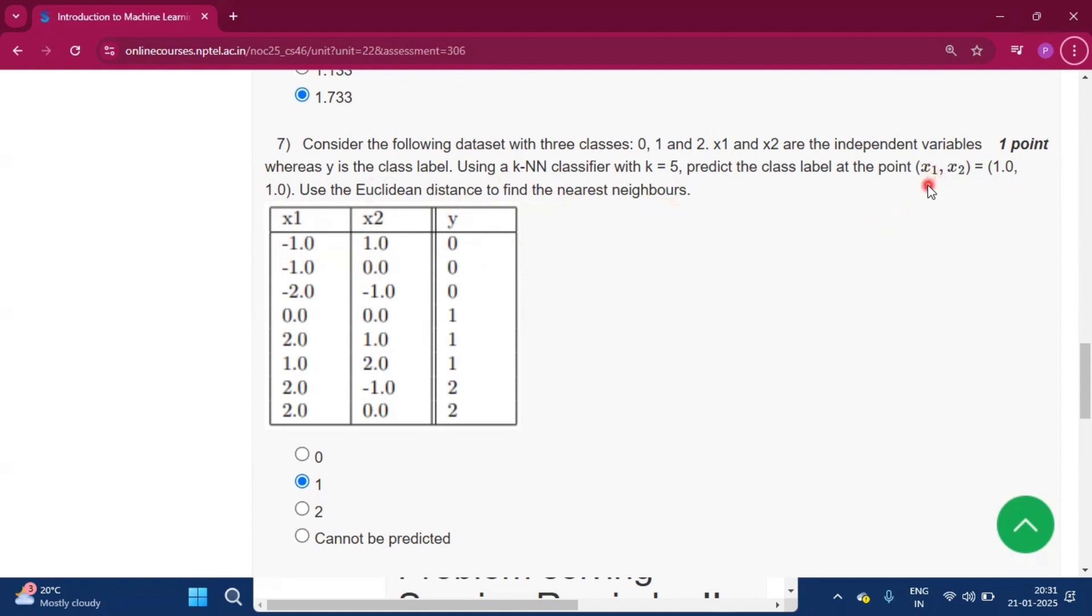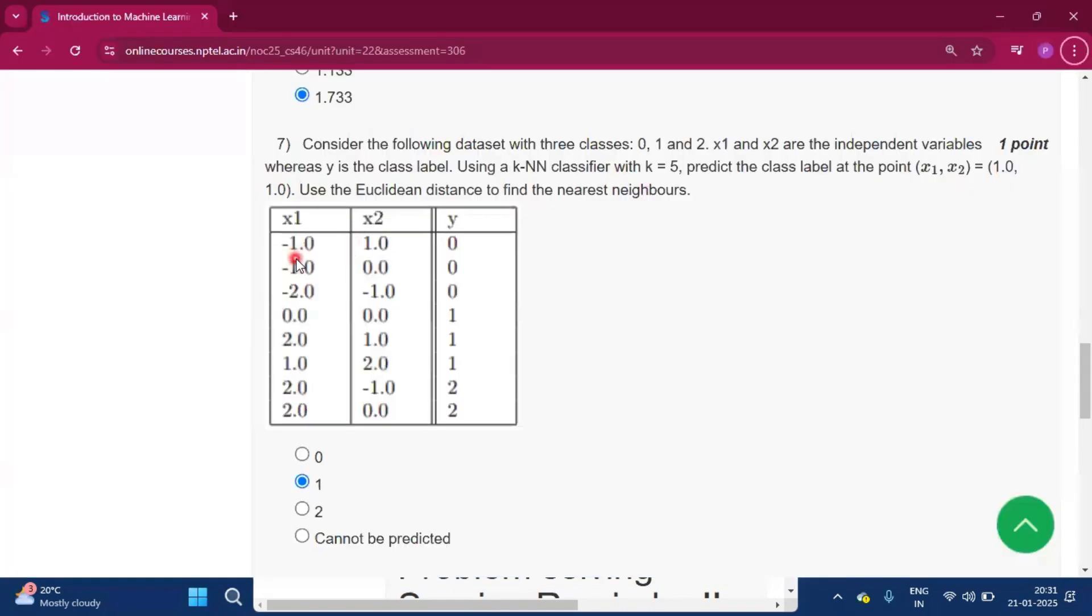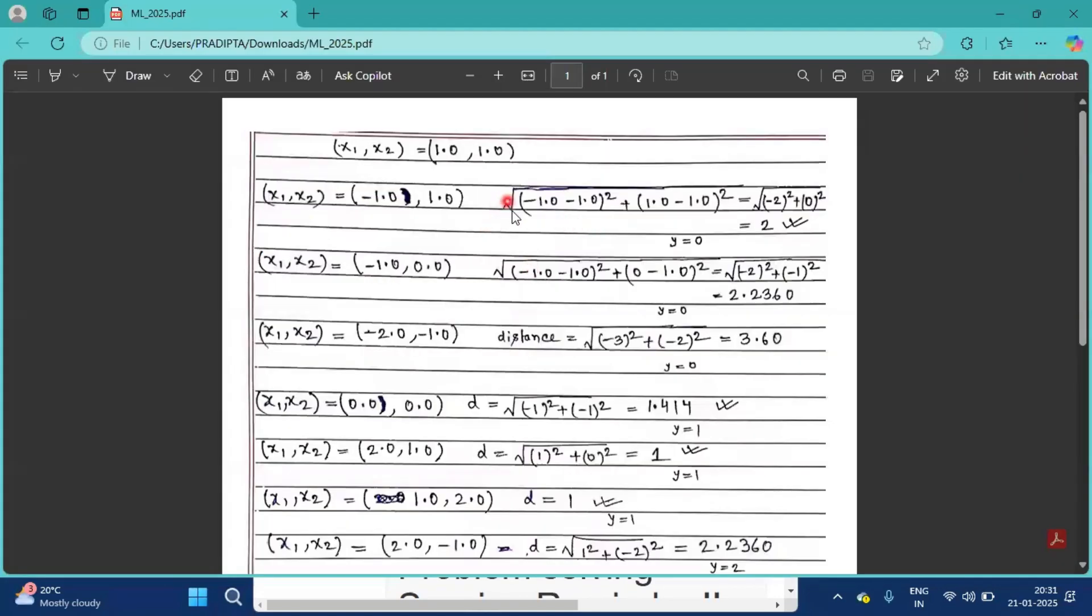Now how to find? We have to first find this distance like x1, x2 and this x1, x2 distance. Let's see how we can find the distance. This x1, x2 value, that means minus 1.0 and 1.0, is this minus 1.0 and 1.0.